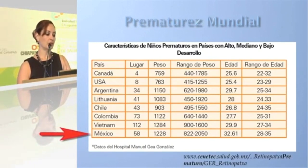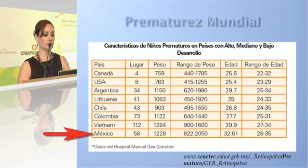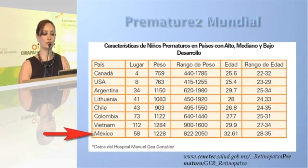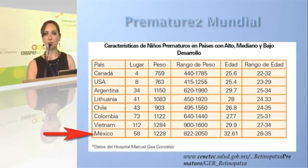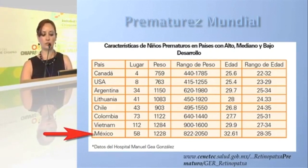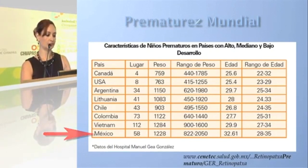In Mexico, which is located at position 58 in global rankings, the average weight of affected infants is 1,228 kg, with a weight range of 800 g to 2 kg. The average gestational age is 32 weeks, with a range between 28 and 35 weeks.